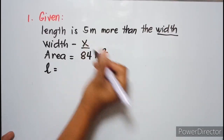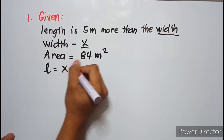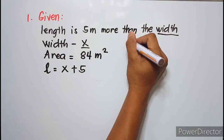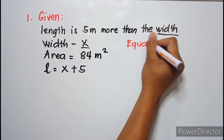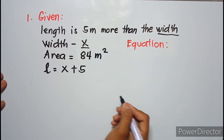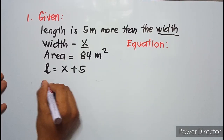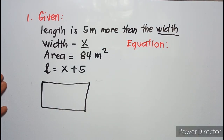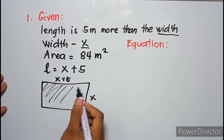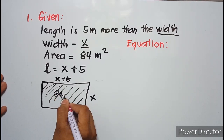So our width is x. Therefore, our length is x plus 5. Since we are dealing with a geometric problem, to illustrate: our width is x, our length is x plus 5, and our area is 84 square meters.